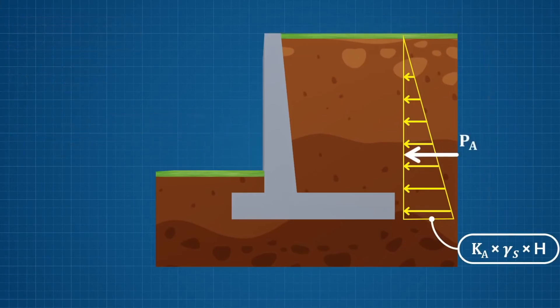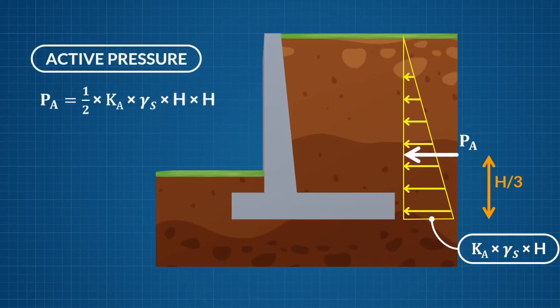The pressure PA acts at the centroid of the active earth pressure. This centroid is at a distance of H over 3 from the base of the retaining wall. The magnitude of this force will be the area of the triangle. The area of the active earth pressure triangle is half times base times height.